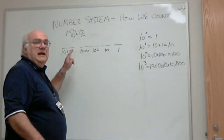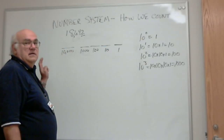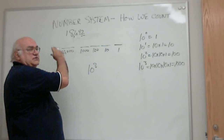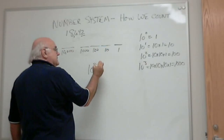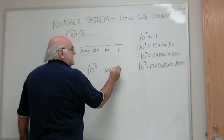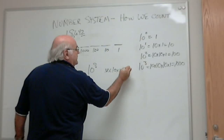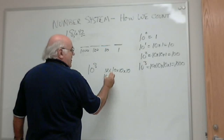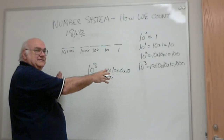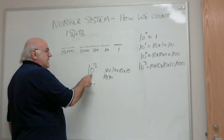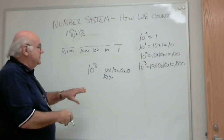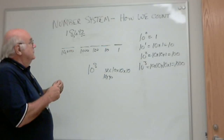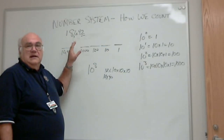10 to the third power equals 10 times 10 times 10 times 1, equals 1,000. And so on. When we get to 10 to the eighth power, which would be several positions over, we're multiplying ten together eight times — man, I'm getting confused there, but you get the point. We multiply them together to get the positional value of that particular number. So this is how we count in decimal.